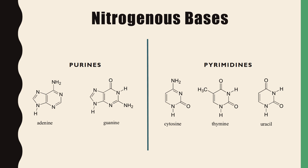One way to remember purines is that the word 'purine' has two syllables and is made up of two rings. If you think about anyone who can afford two rings, they can also afford to shop at the GAP — G for guanine, A for adenine, and P as a reminder that those are purines. Pyrimidines have a single ring structure and include cytosine, thymine, and uracil.